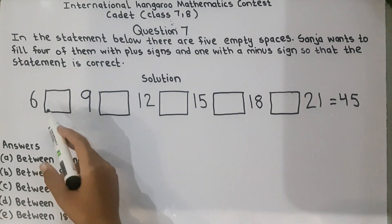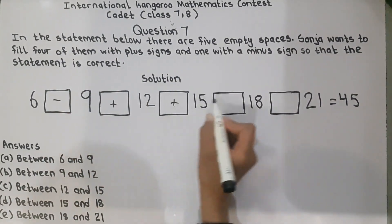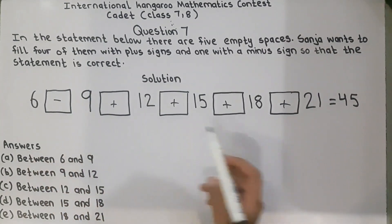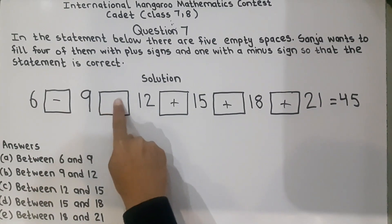So first we will try putting minus in every box. First we will put minus in this box and in the rest we will put plus signs. Let's check whether our statement is true or not. 6 minus 9 equals minus 3, plus 12 equals 9, plus 15 equals 24, plus 18 equals 42, plus 21 equals 63. This is giving us 63 and we need 45. It means this statement didn't work, so we will erase this.